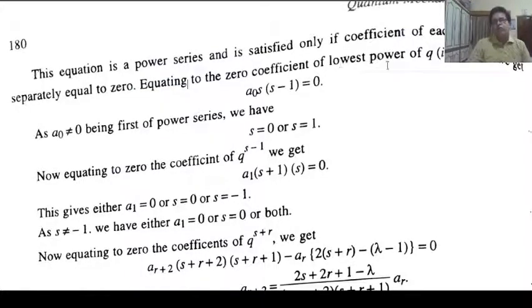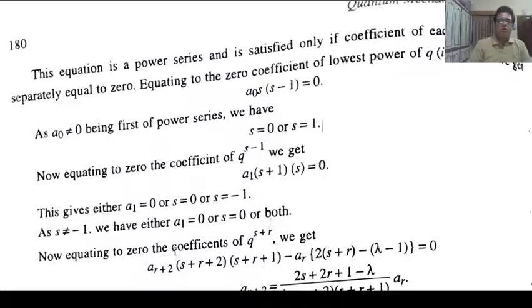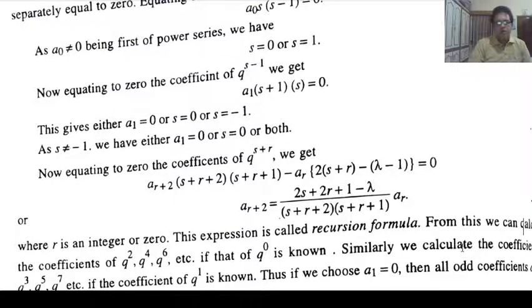Equating to zero the coefficient of the lowest power of q gives A_0·s(s−1) = 0. Since A_0 ≠ 0, we get s = 0 or s = 1. Equating to zero the coefficient of q^(s−1) gives A_1·s(s+1) = 0, yielding either A_1 = 0 or s = 0 or s = −1. Since s ≠ −1, we have either A_1 = 0, s = 0, or both. Equating coefficients for q^(s+r) leads to the recursion relation for A_(r+2), where r is a non-negative integer. This is the recursion formula from which we can calculate coefficients for all even powers of q if A_0 is known, and odd powers if A_1 is known.